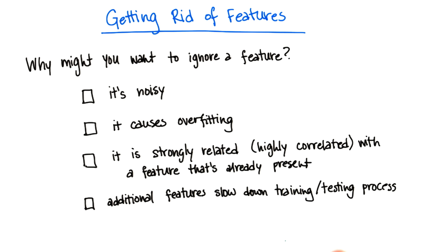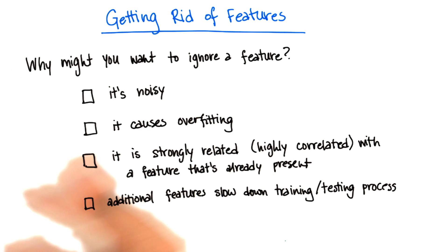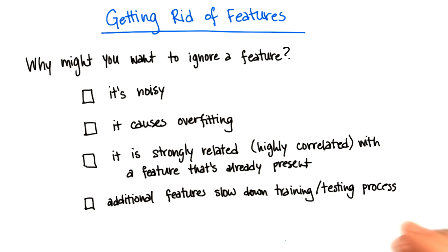In order to keep things moving along quickly, you want to be working with the bare minimum number of features required to get good performance. So you tell me — which of these are good reasons to ignore a feature?